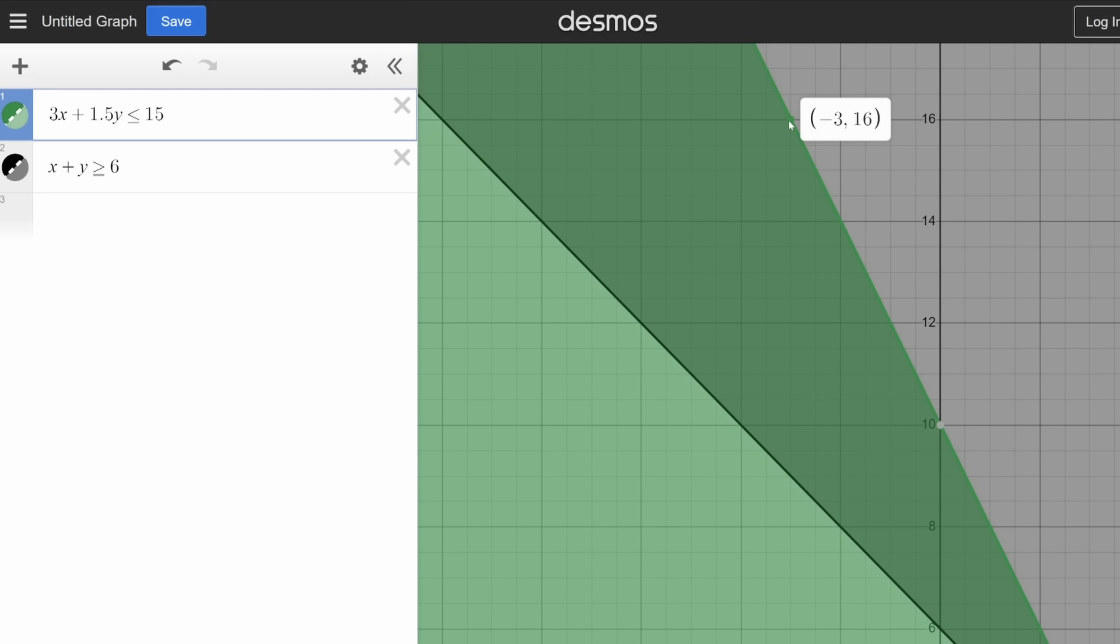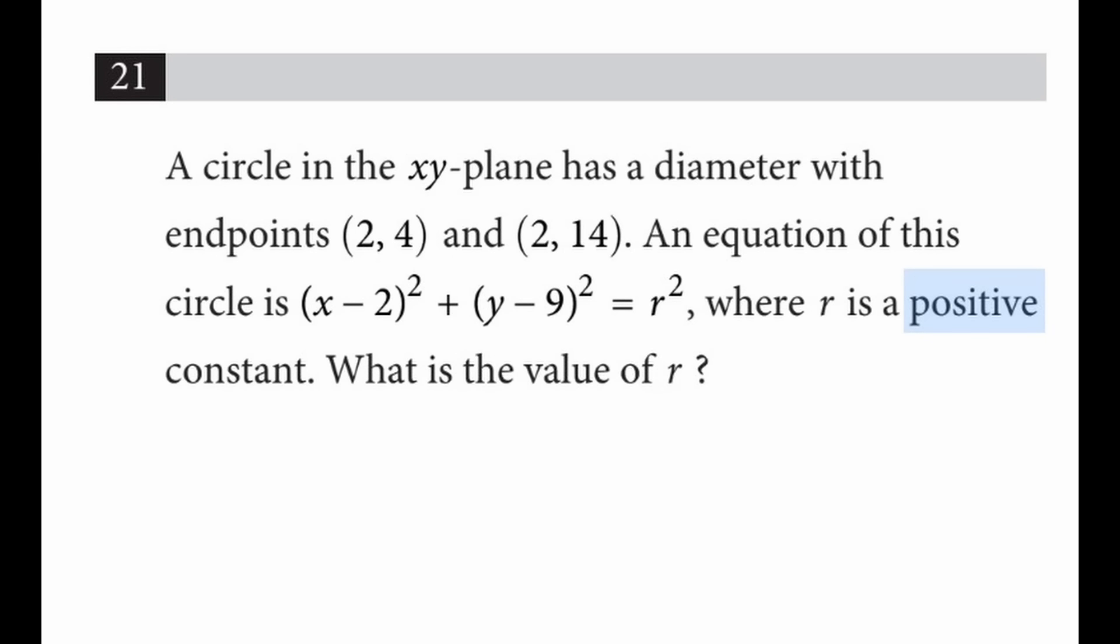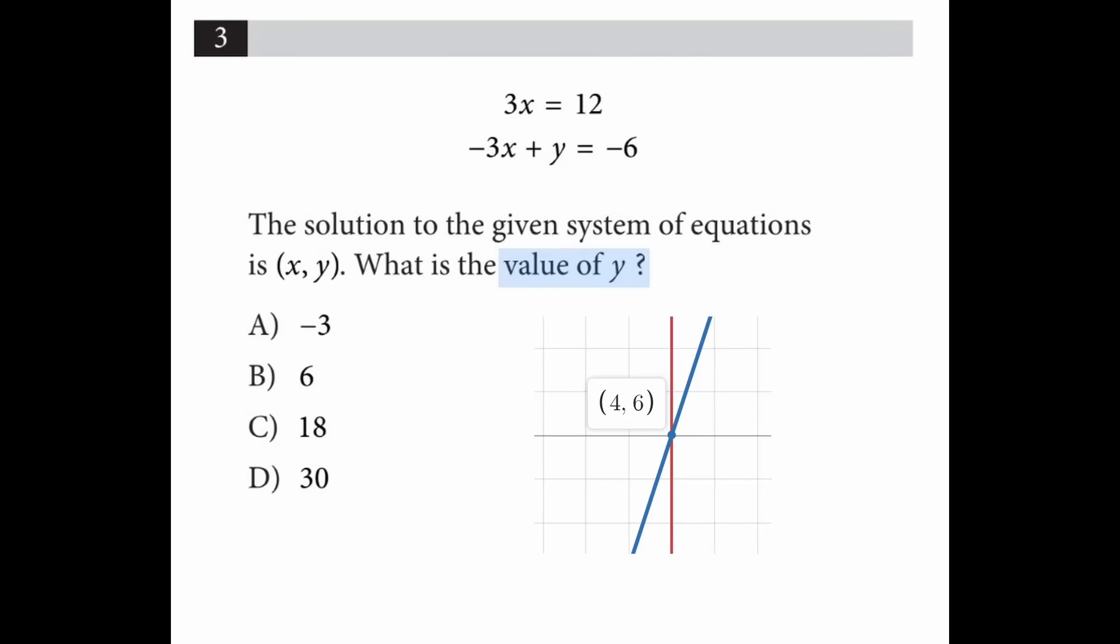But students do this all the time. The question will ask for a positive solution, and they'll pick the negative one. The question will ask for Y, and they'll pick X. Don't get lost in the sauce and remember what you're actually solving for. This is just general SAT advice.